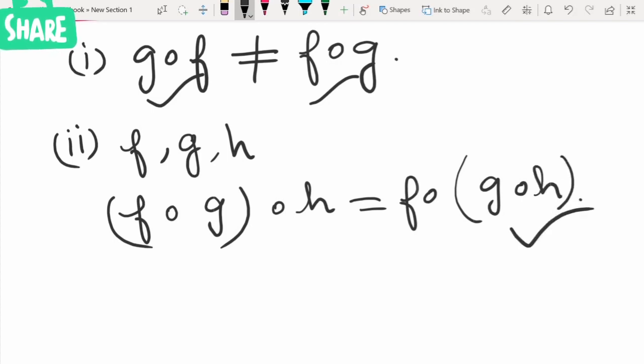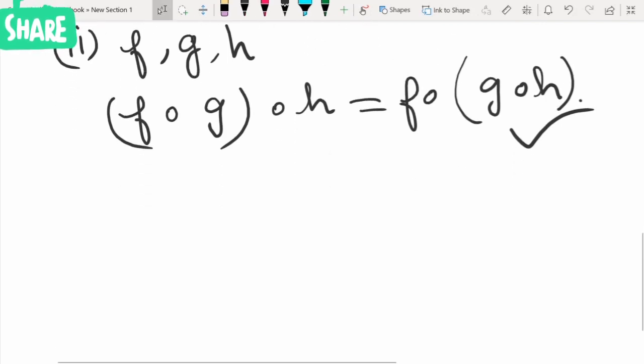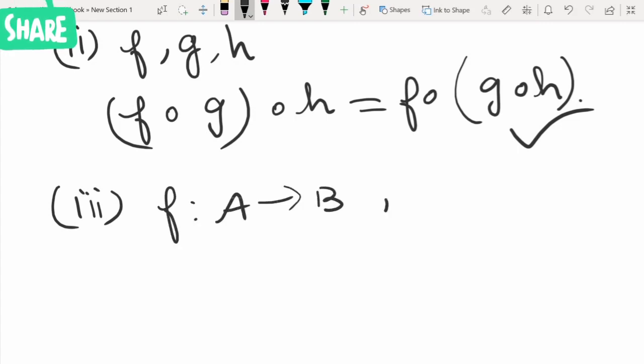The commutative property need not be true in all cases. And the third result is if f from A to B is bijection and g from B to C is also a bijection,